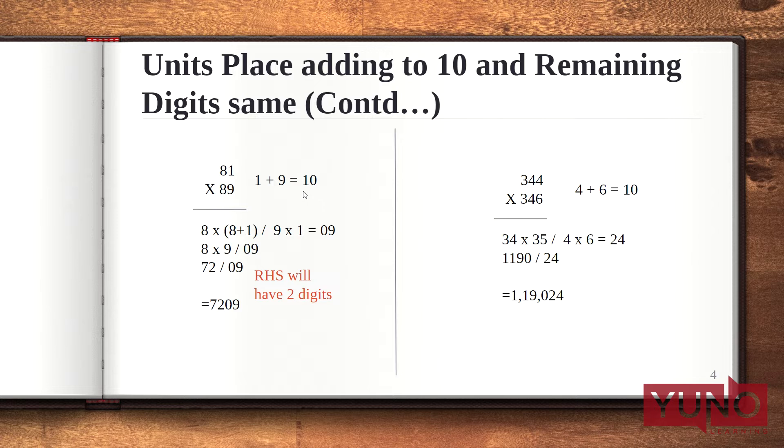Now let us understand how we will multiply numbers in such cases. The first step here is that we multiply the rightmost digits together, that is 9 into 1 gives 09. Now I am writing here 09 because my right hand side will have two digits and now these 8 are same. So I will multiply 8 with its successor, that is 8 multiplied with 8 plus 1. That is 8 multiplied with 9 gives 72.